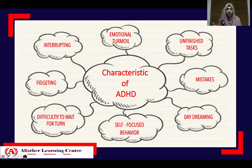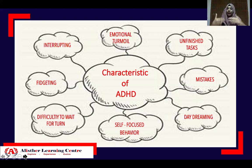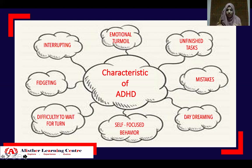Next is emotional turmoil — difficulty keeping their emotions in check. They may have outbursts of anger at inappropriate times. For example, while waiting in line to play, the child might become restless and this feeling of restlessness may make them angry or upset, causing them to cry or show temper as a sign of frustration.